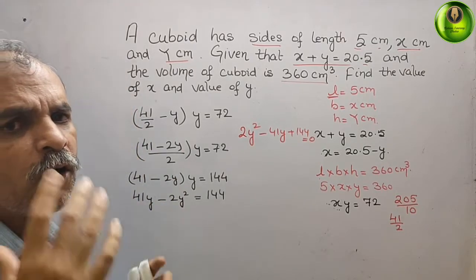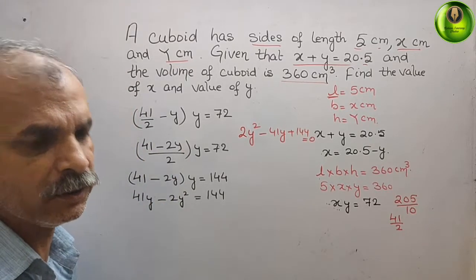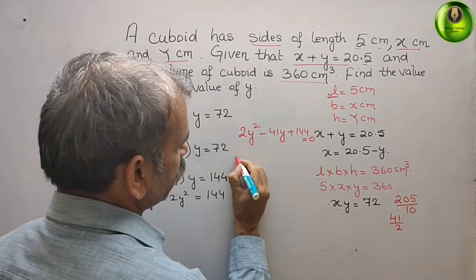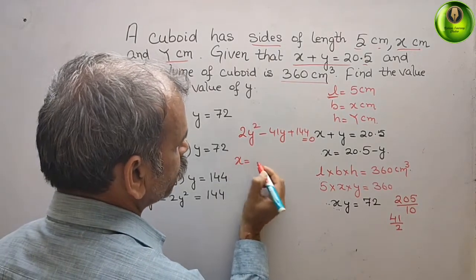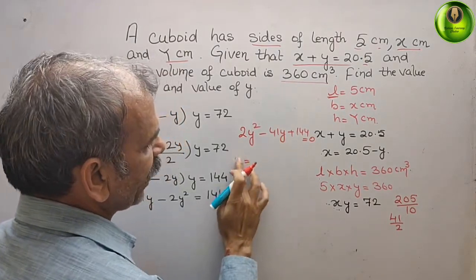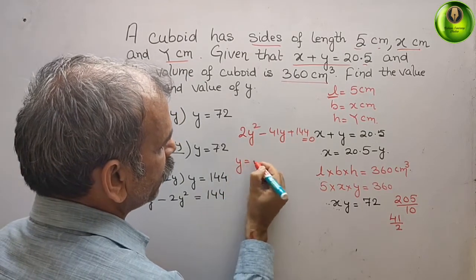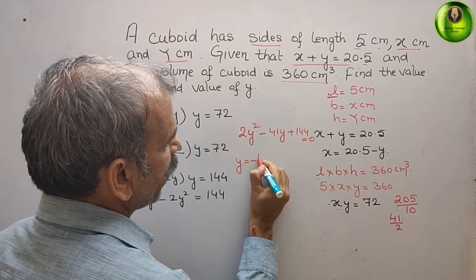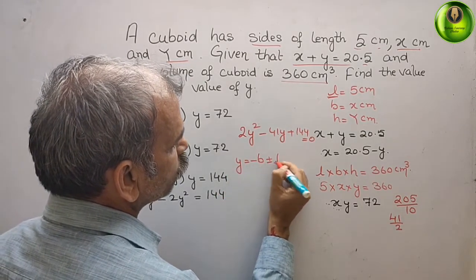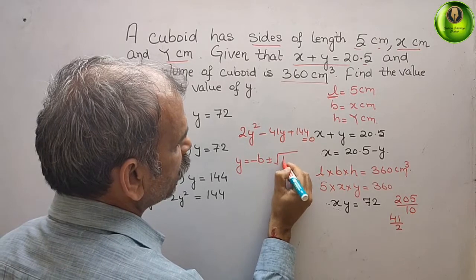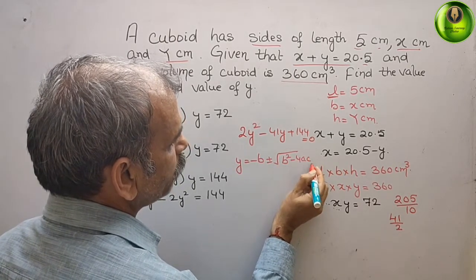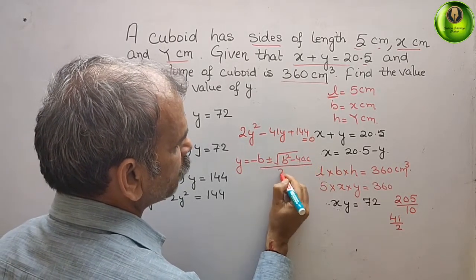We will solve this using the quadratic formula. y is equal to minus b plus or minus root over b squared minus 4ac, all divided by 2a.